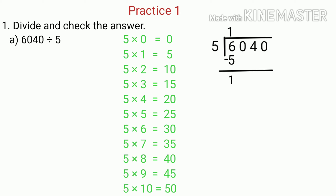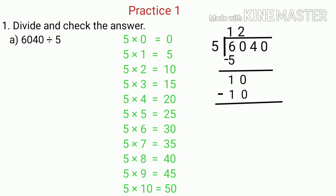Now we bring down the next digit of the dividend, that is 0, and the number becomes 10. We compare 10 and 5 — 10 is greater than 5, so we divide 10 by 5. We find that 2 times of 5 is equal to 10, so we write 2 as the quotient above 0. Since 5 multiplied by 2 is 10, we write 10 below and subtract — 10 minus 10 gives us 0.